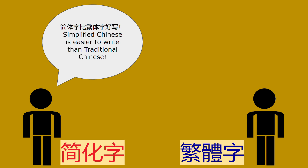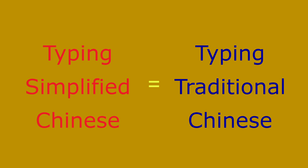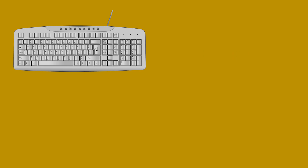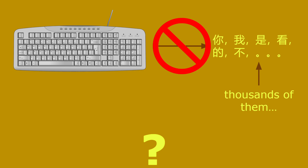However, traditional Chinese supporters often refute this by claiming that people type more nowadays than they write. Typing is arguably a lot faster than writing, and there isn't much of a difference between typing simplified Chinese and typing traditional Chinese. In order to type out Chinese, you would need a keyboard with all the Chinese characters laid out — but that would be practically impossible since there are thousands upon thousands of characters.